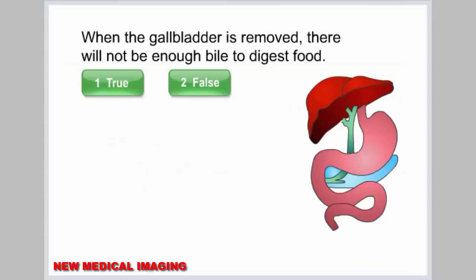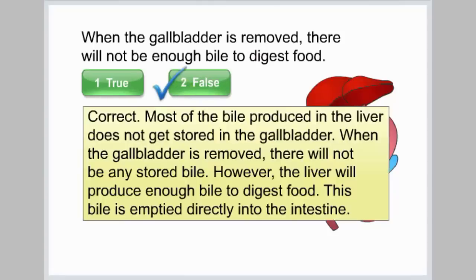When the gallbladder is removed, there will not be enough bile to digest food. Select true or false. Correct. Most of the bile produced in the liver does not get stored in the gallbladder. When the gallbladder is removed, there will not be any stored bile; however, the liver will produce enough bile to digest food. This bile is emptied directly into the intestine.